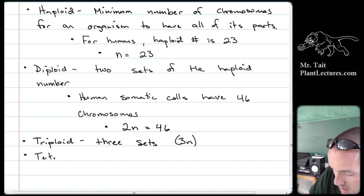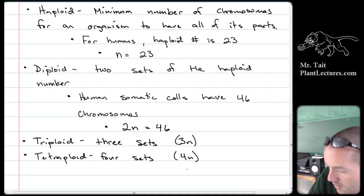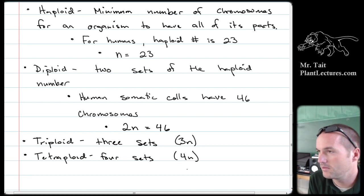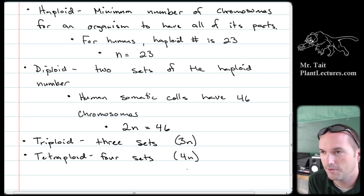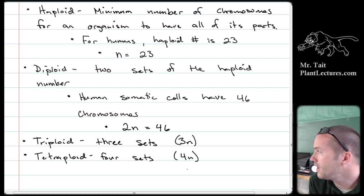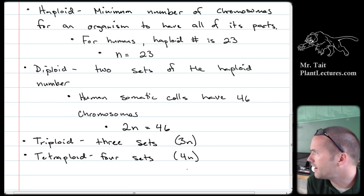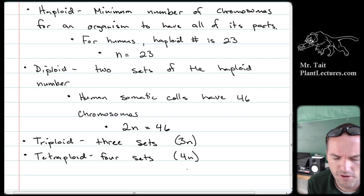There's also tetraploid — four sets, written as 4N — and even decaploid. In fact, some really weird plants are like 128N. We'll talk later about why plants are much more likely to be polyploid than animals, which has to do with their life cycles.